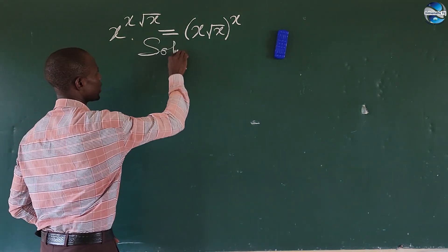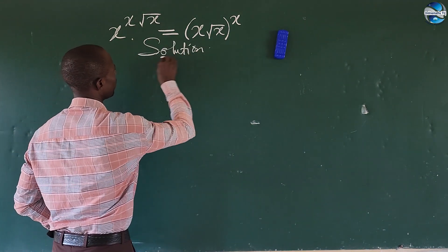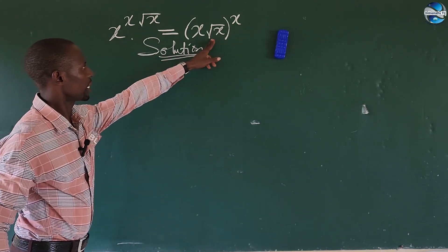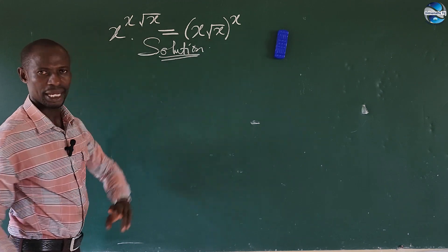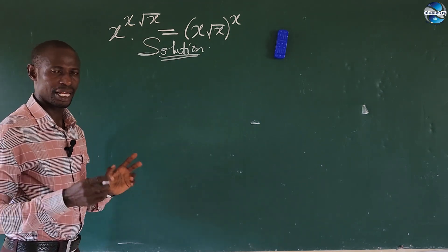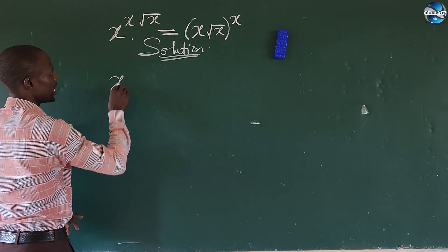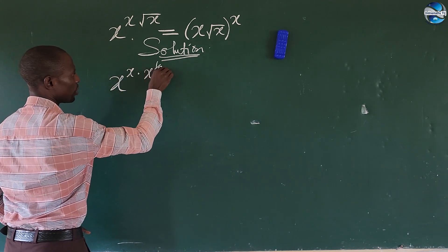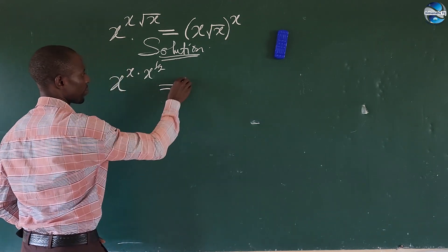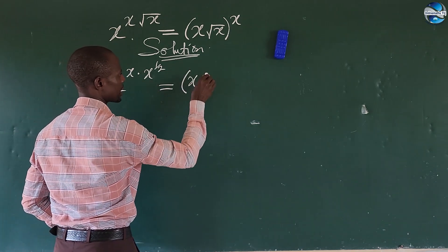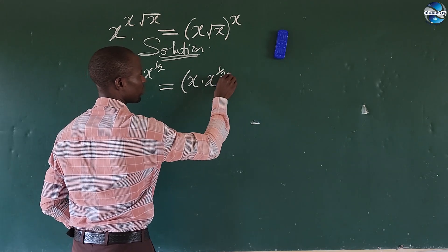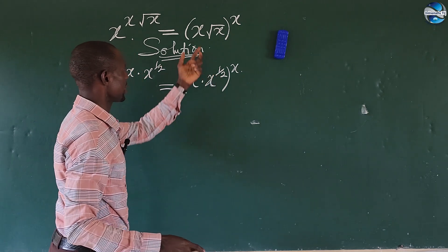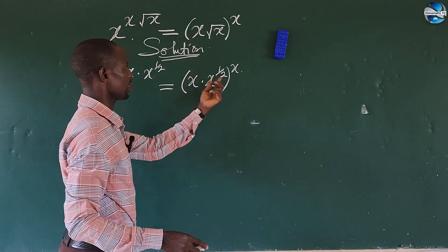The first thing we do is handle this radical. All we need to do is handle the radical here. We convert it to numerals. So this will give us x to the power of x times x to the power of 1 over 2. This is equal to bracket open x times x to the power of 1 over 2 close bracket, all to the power of x. So we succeeded in changing the radical to this format.